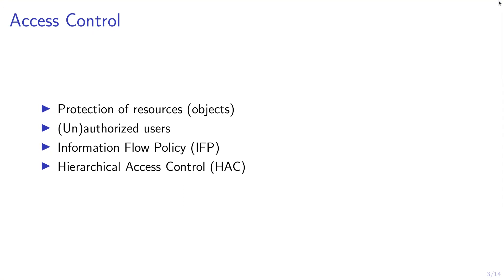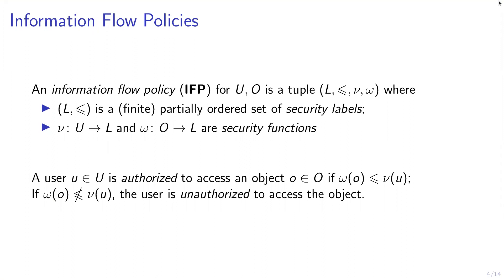Since this information flow policy can be represented by a hierarchy, this is also called hierarchical access control. An information flow policy, or IFP for short, for a set of users U and a set of objects O is a tuple, where we have a set L of security labels and a relation less-than-or-equal-to, which together forms a partially ordered set.